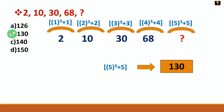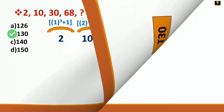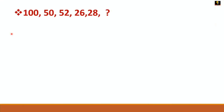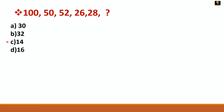Now let's start with the next problem. The given series is: 100, 50, 52, 26, 28 — find the next number. The options are given as A, B, C, and D. Let's take 30 seconds to solve it.